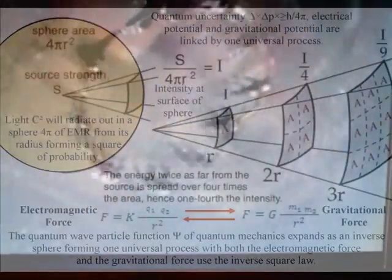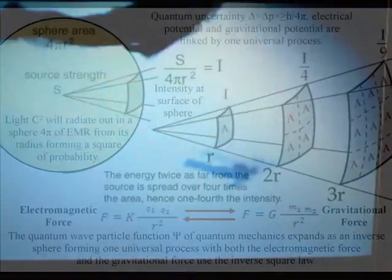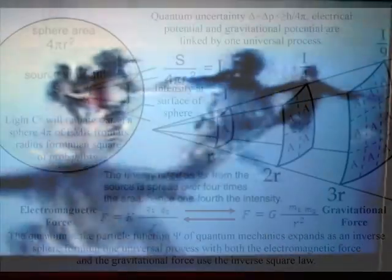There is no mysterious action at a distance. The gravitational field will work at the speed of light because it is an integral part of one universal process with the electromagnetic force.